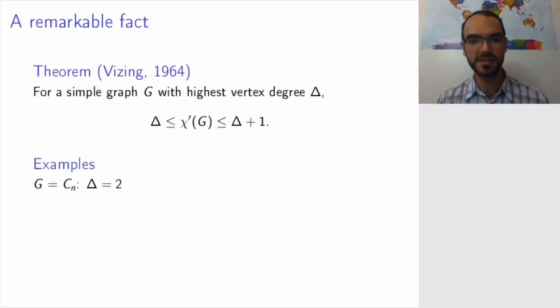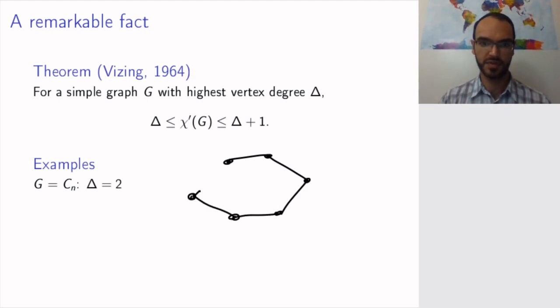But let's look at a few examples. So let's look at the cycle graph Cn. For Cn the highest vertex degree is 2. In fact all vertices have degree 2. So let's look at the example of C6. And now just like with the vertices I can color the edges, every other one red, every other one black, and two colors are enough.